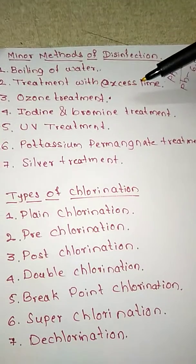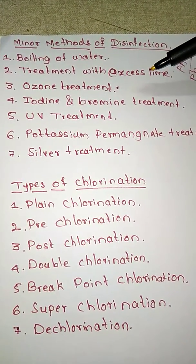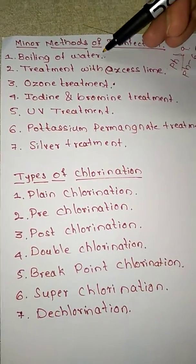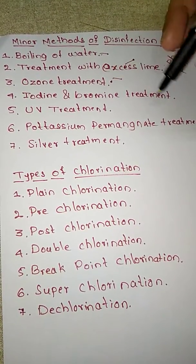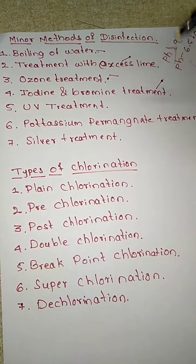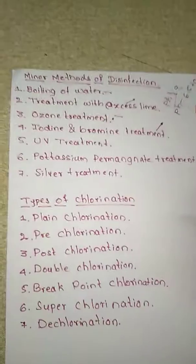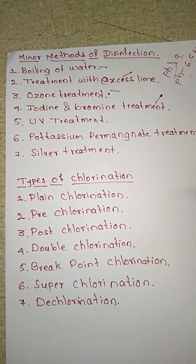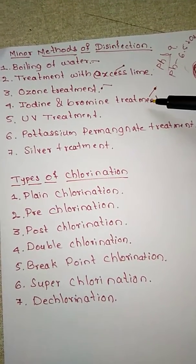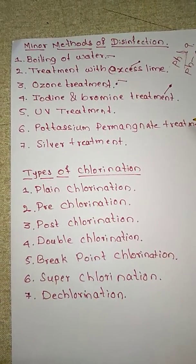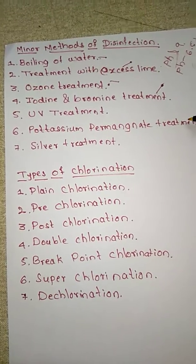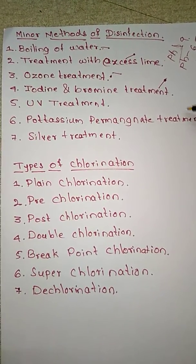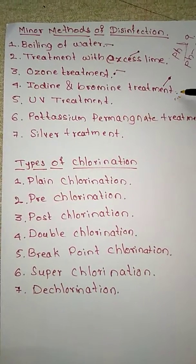The next method is iodine and bromine treatment, which falls under chemical treatment. The dosage is limited to about 8 ppm and the contact period is generally five minutes. Iodine and bromine are available in the form of pills and are very handy. However, they are not suitable for large-scale supply and may only be used for treatment of small water supplies.